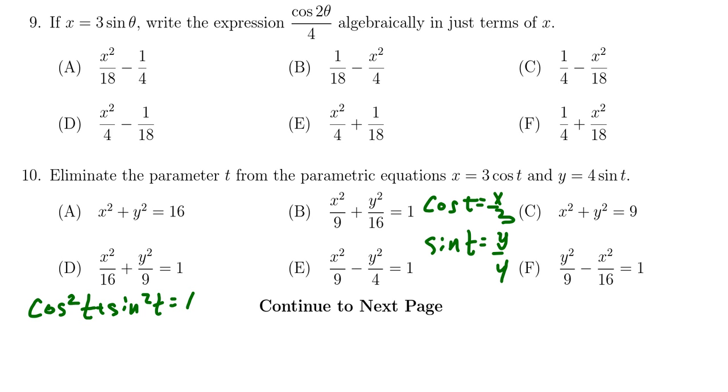Substituting that into this equation, we end up with x over 3 squared plus y over 4 squared is equal to 1. Squaring the denominators, we get x squared over 9 plus y squared over 16. This is equal to 1.